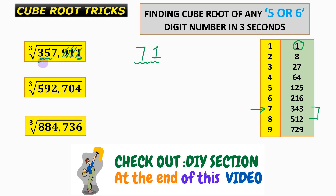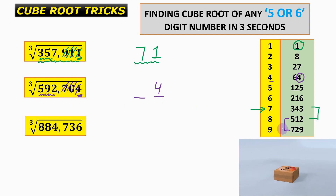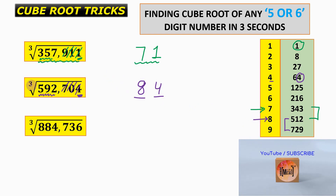For the next question, the unit place is 4, which occurs when the original unit digit is 4, so we write 4. Discarding the last three digits leaves 592. Since 592 lies between 512 (8³) and 729 (9³), we pick the smaller number 8 as the tens digit, giving the cube root as 84.